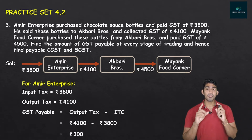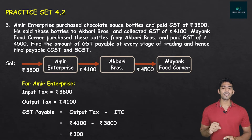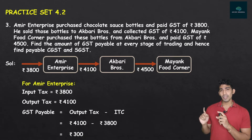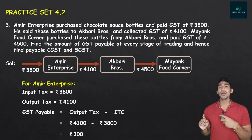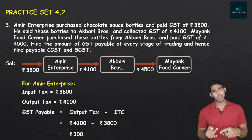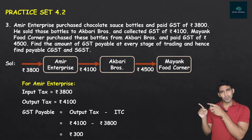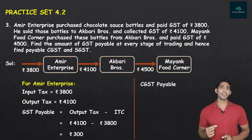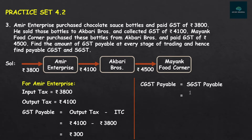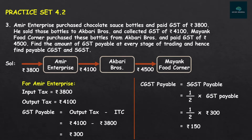We have got the GST Payable. The question also asks us to find payable CGST and SGST. CGST payable is always equal to SGST payable, and each is always half of the payable GST. Half of 300 is Rs. 150. So Amir Enterprise must pay GST of Rs. 300, with CGST of Rs. 150 and SGST of Rs. 150. Amir Enterprise's question is complete.